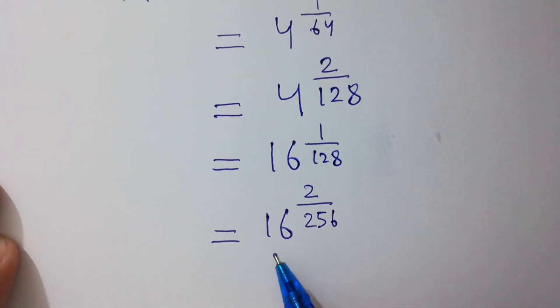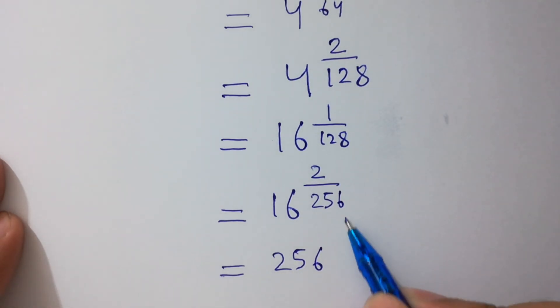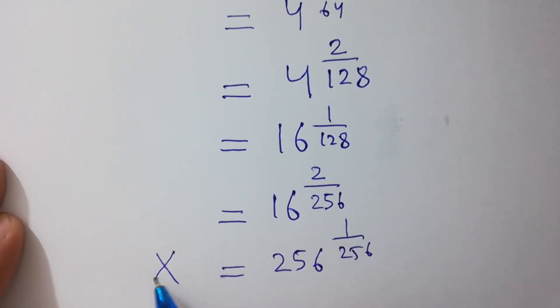So here, 16 squared equals 256 to the power 1 over 256, and here we have x to the power 1 over x.